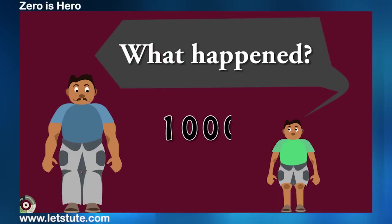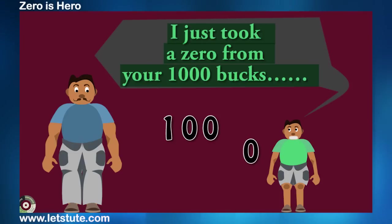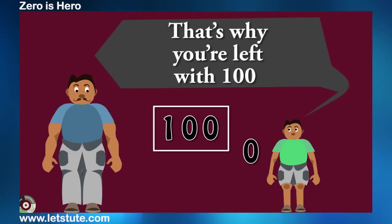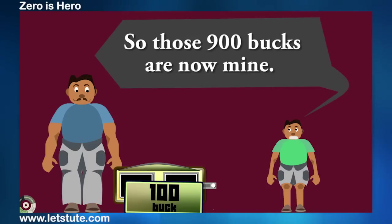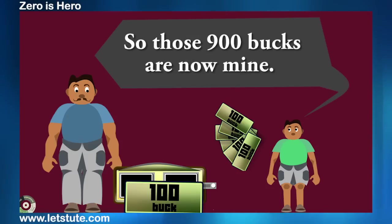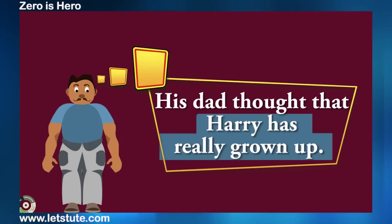Harry said, what happened? I just took a zero from your 1000 bucks. That's why you are left with 100. And so those 900 bucks are now mine. His dad thought that Harry has really grown up.